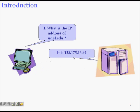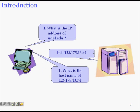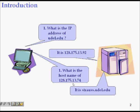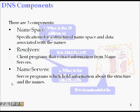The name server can also do the reverse: you give it an IP address and it returns the hostname. For example, given 128.175.13.74, it will tell you the hostname is stross.udl.edu. This is the concept of the domain name server.